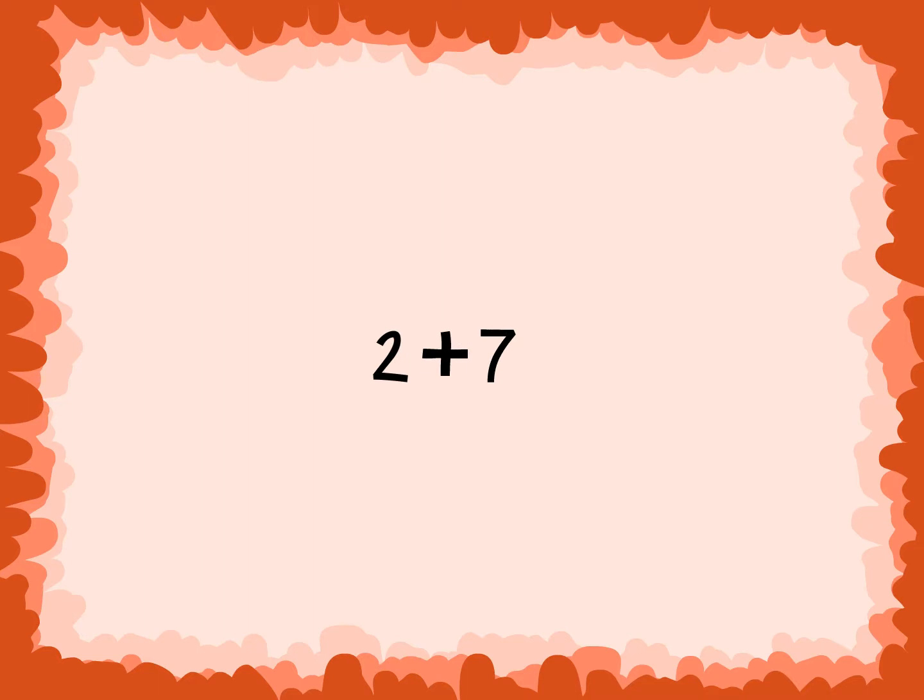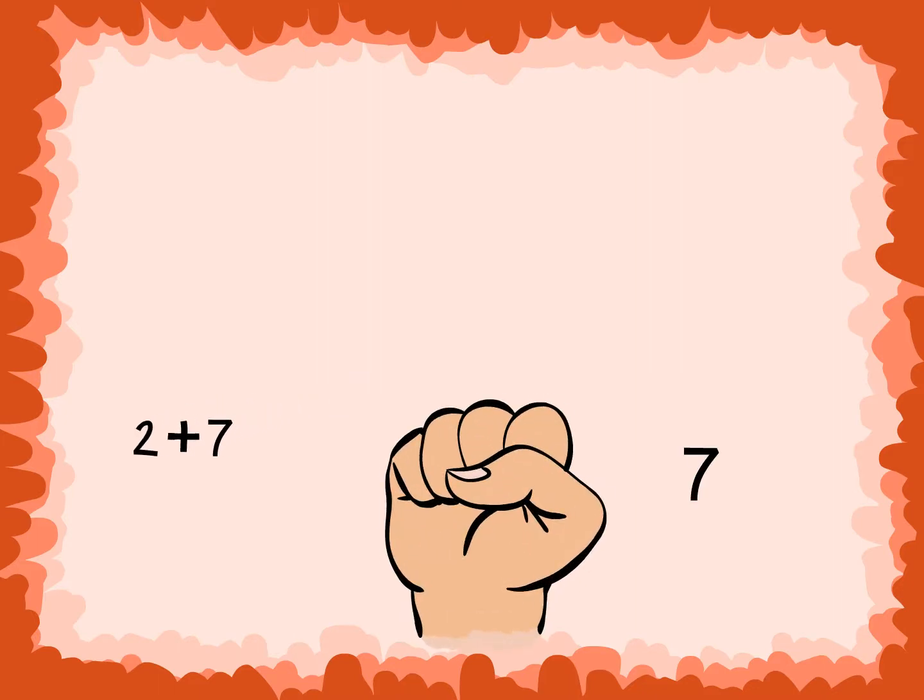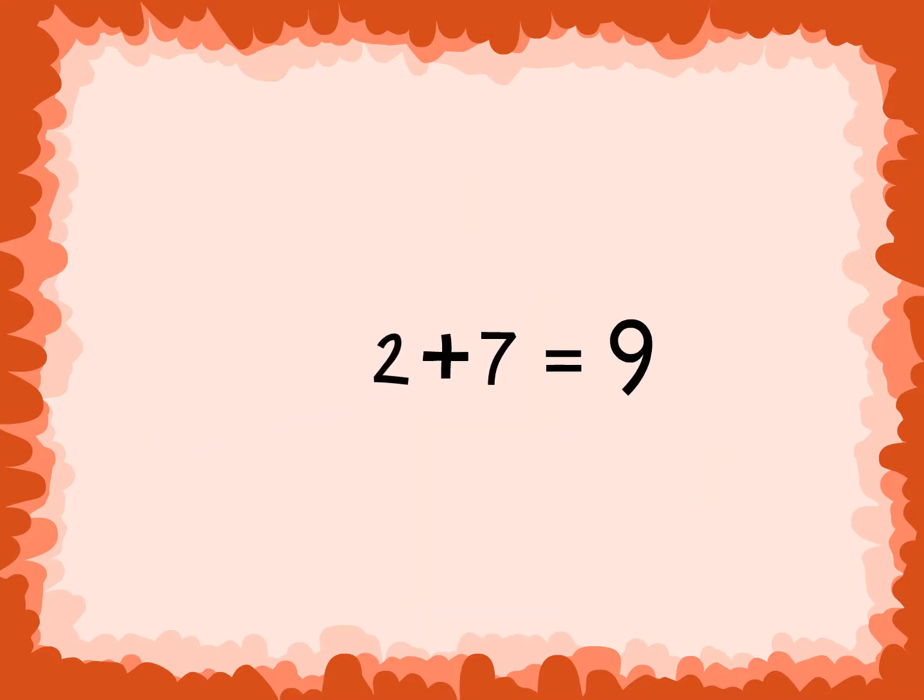2 plus 7. 7 is the larger addend, so say 7 and count on two more. 7, 8, 9. So 2 plus 7 equals 9.